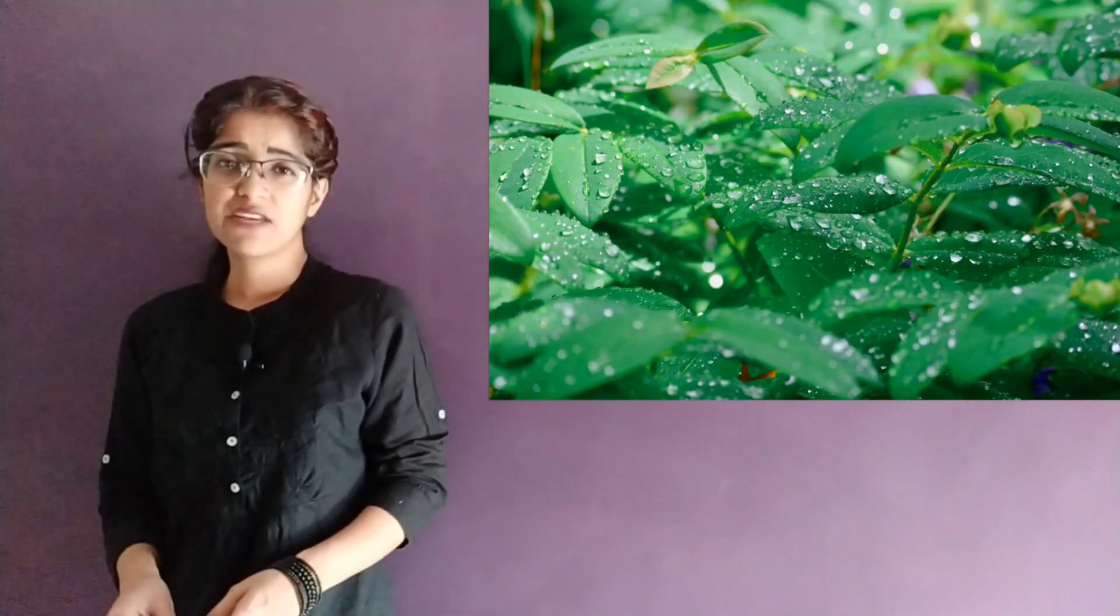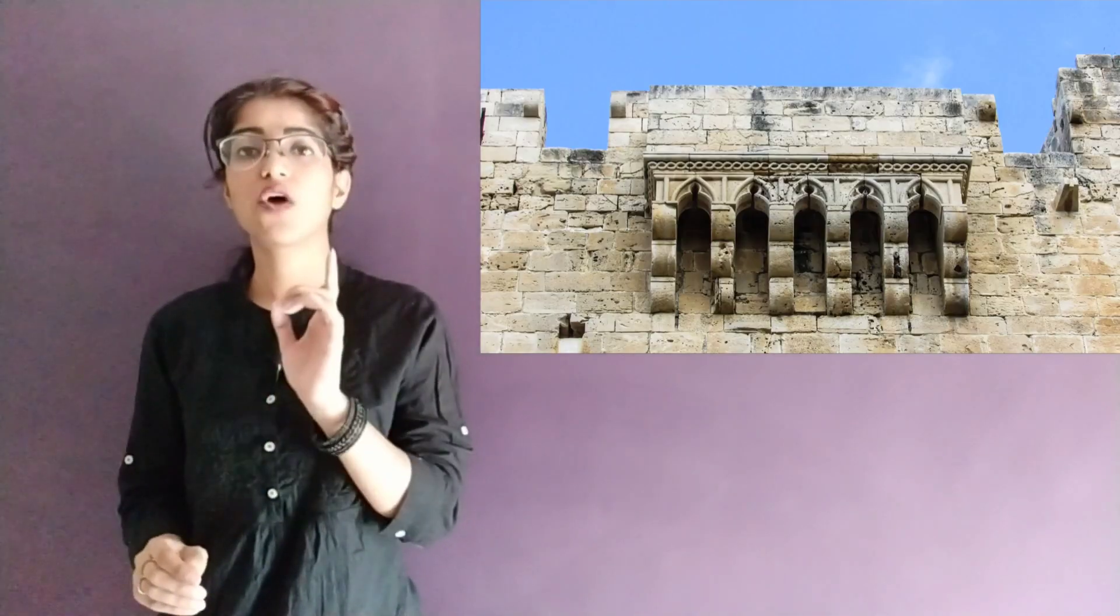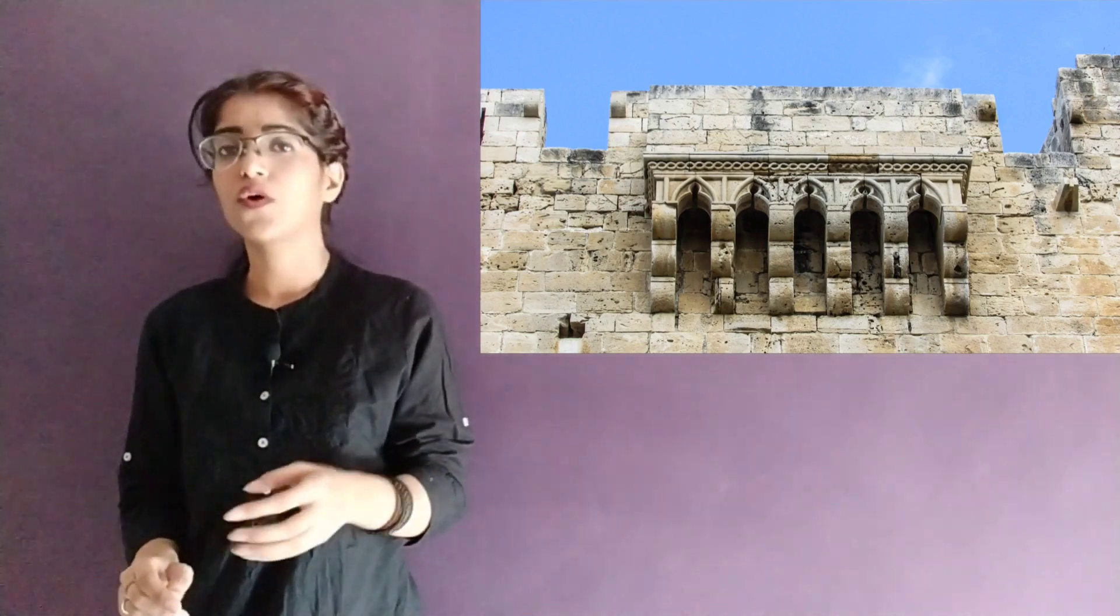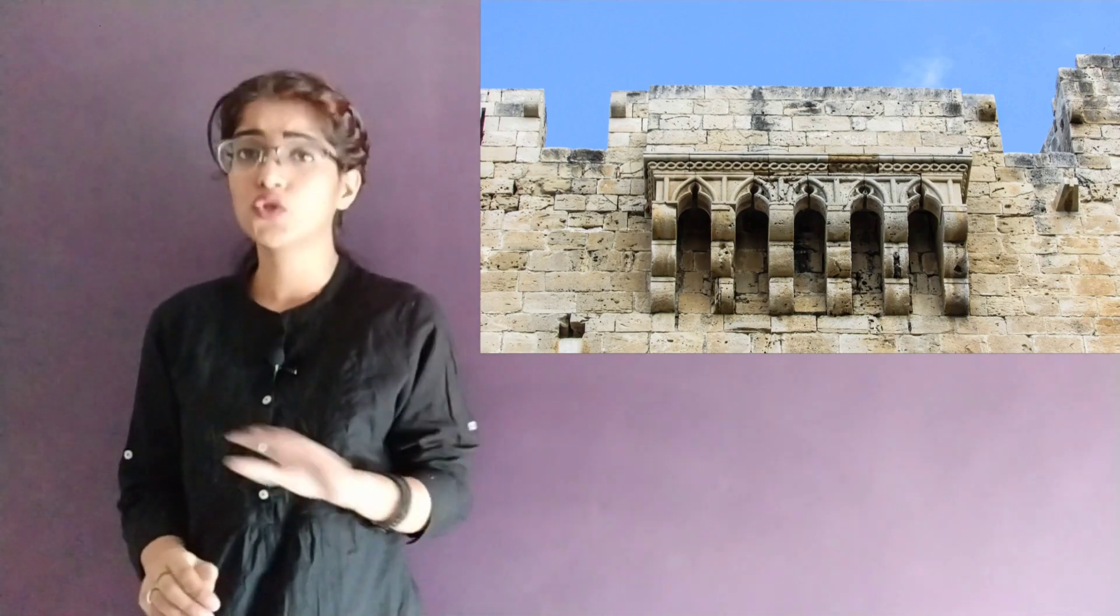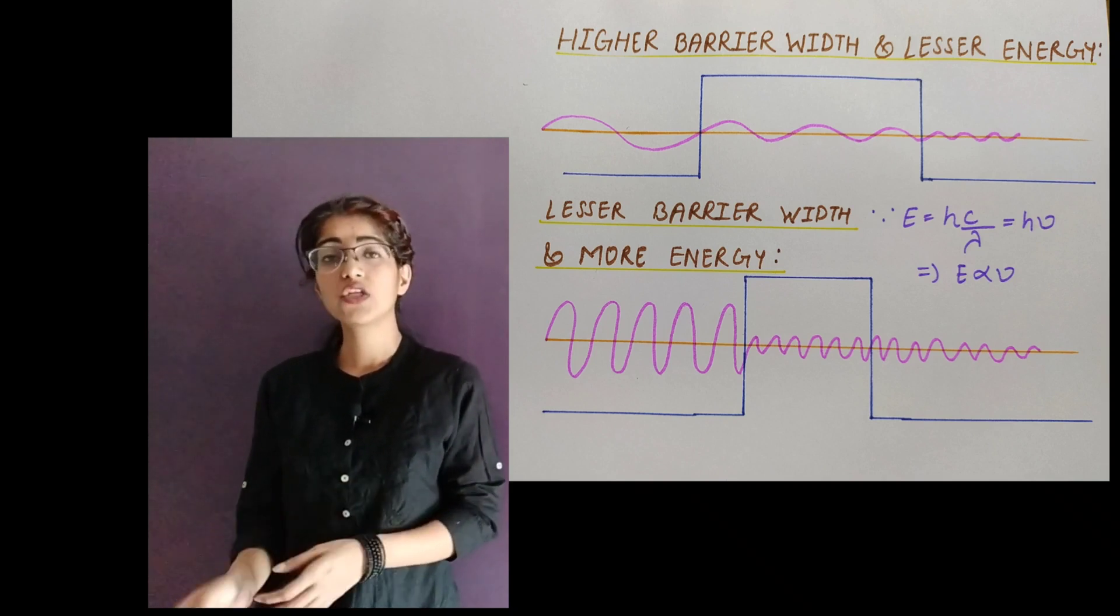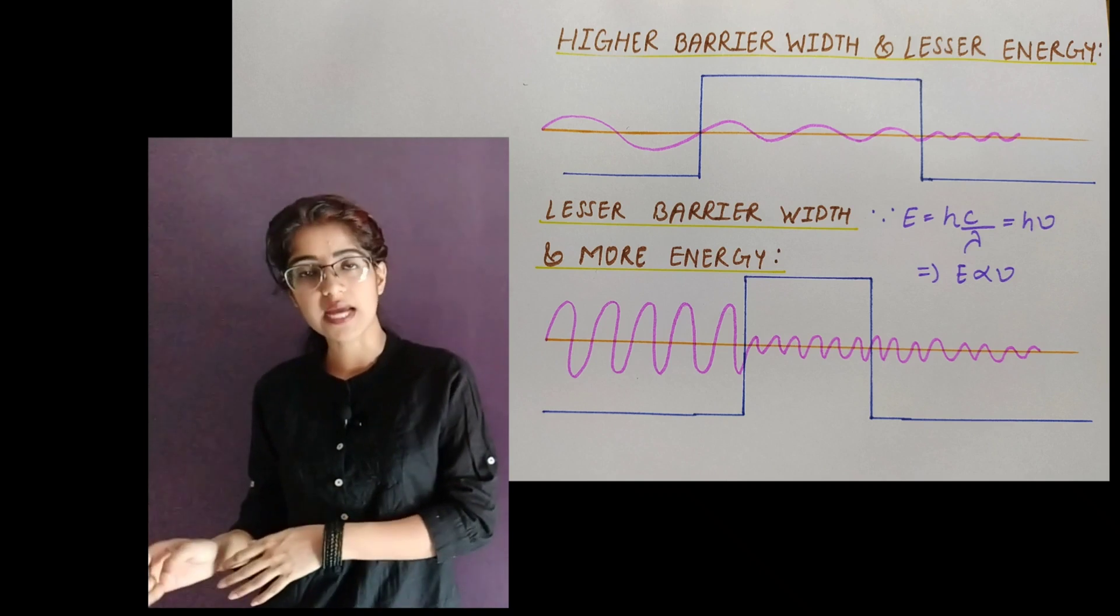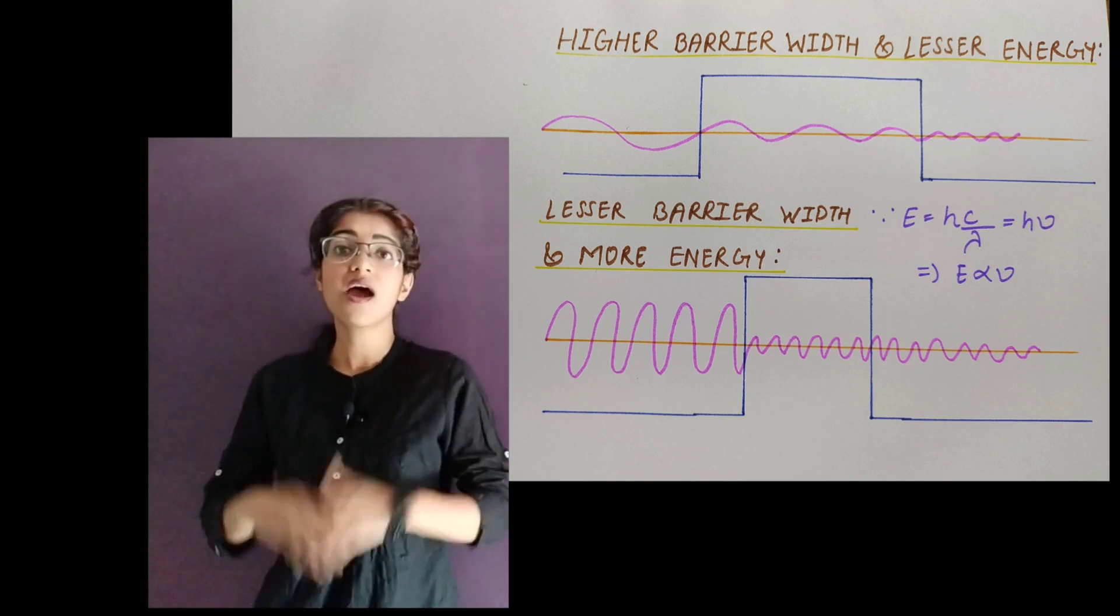Whenever it rains heavily for a longer time, then we get to see damp on the rooftops of old buildings. Now listen to me carefully: if the rain would have not been that heavy and the roof not that thin, then there would have been no drops. Which means that if the width of the barrier is less and the energy of the wave is high, then it has more chances of popping up on the other side as compared to the one which has a high barrier width. From the Schrödinger equation, we get to see the decay of it exponentially.